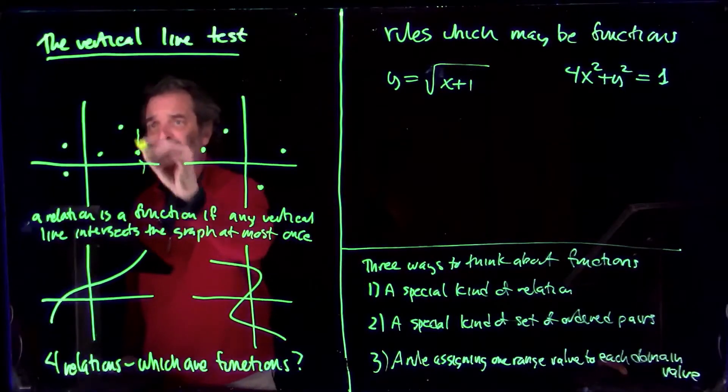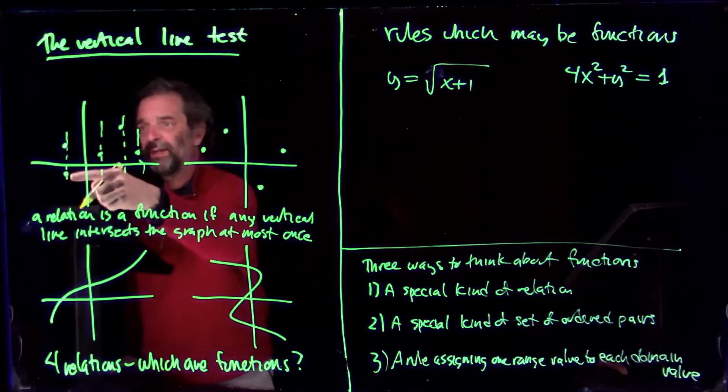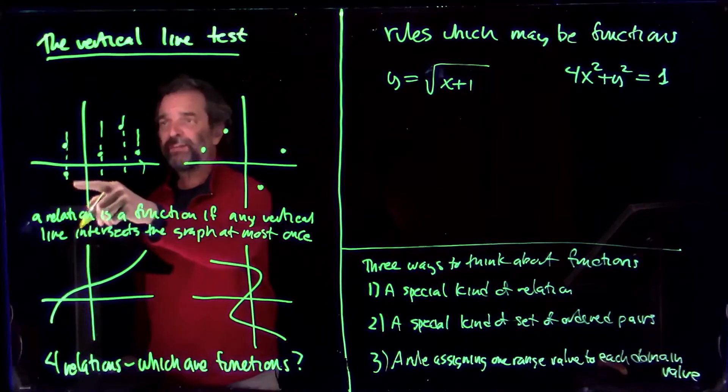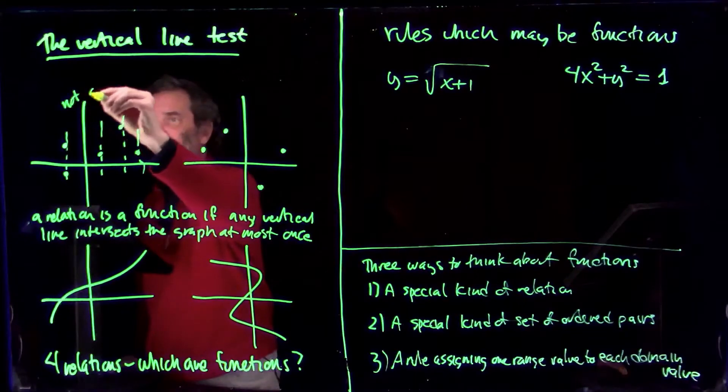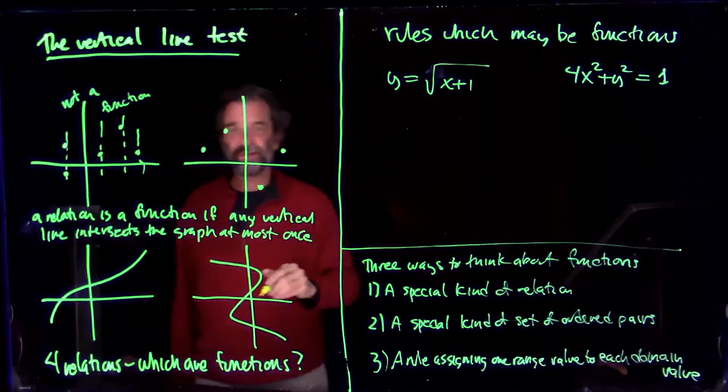So we just go to each point here, start going vertically through it like that. And I see here I hit the graph two times. If you hit it two times, it's not a function. If you'd never hit it two times, it is a function.